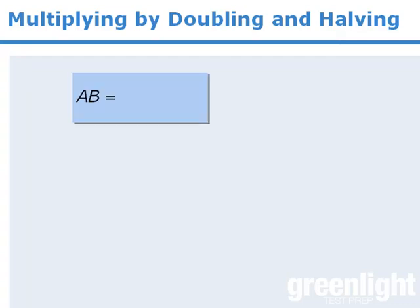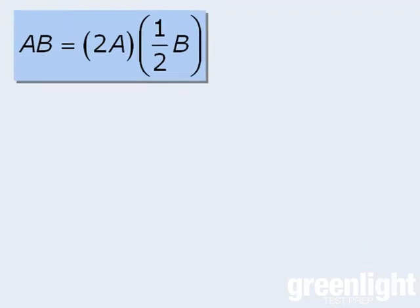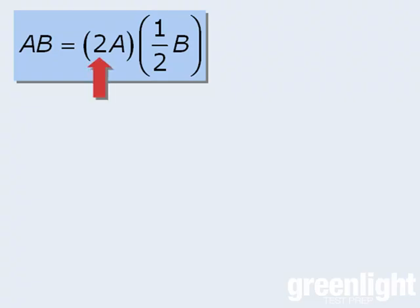Notice that if we multiply A times B, this product will be equal to the product of 2A times 1/2 B. These two values are equal since the 2 and the 1/2 multiply to get 1, which makes the right hand side equal to A times B.